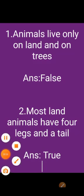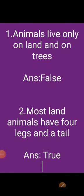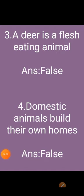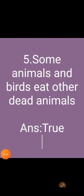Now we will do exercises. Write true or false. First: animals live only on land and on trees — false. Second: most land animals have four legs and a tail — true. Third: a deer is a flesh-eating animal — false. Fourth: domestic animals build their own homes — false. Fifth: some animals and birds eat other dead animals — true.